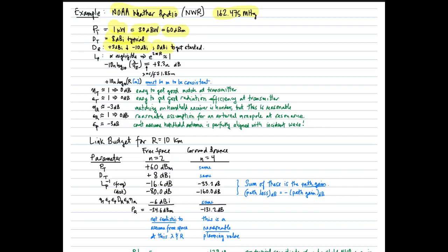For path loss at VHF 162 MHz, attenuation is negligible, so the e to the 2 alpha r factor is about 1 and we can ignore it. The frequency term, minus 10n log10 of lambda over 4 pi: the wavelength is 1.85 meters for 162.475 MHz, giving us plus 8.3n dB. For free space with n equals 2, that's 16.6 dB. The spreading term in path loss is plus 10n log10 of range in meters — we must use meters consistently since we used meters in the frequency term.